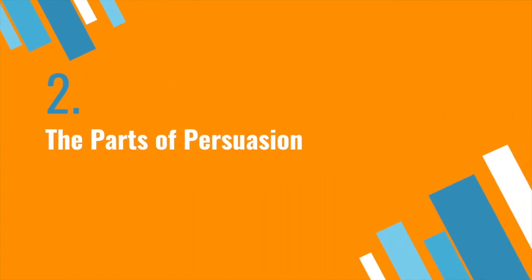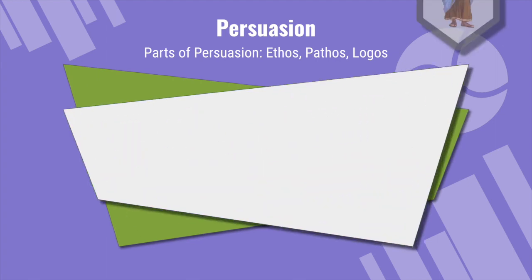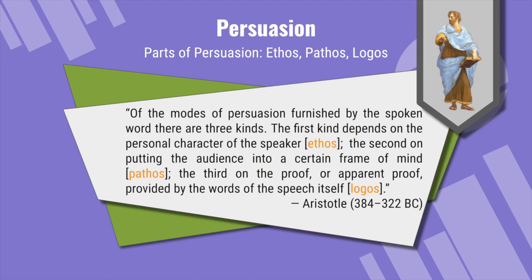Let's talk about the parts of persuasion — this is perhaps the most useful critical thinking tool I have ever found. The parts of persuasion are ethos, pathos, and logos. The philosopher Aristotle said that of the modes of persuasion furnished by the spoken word, there are three kinds: the first kind depends on the personal character of the speaker — ethos; the second on putting the audience into a certain frame of mind — pathos; the third on the proof or apparent proof provided by the words of the speech itself — logos.